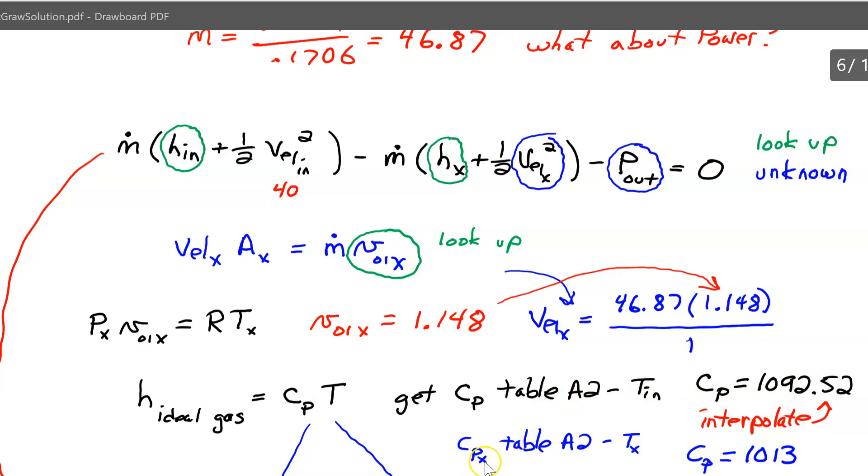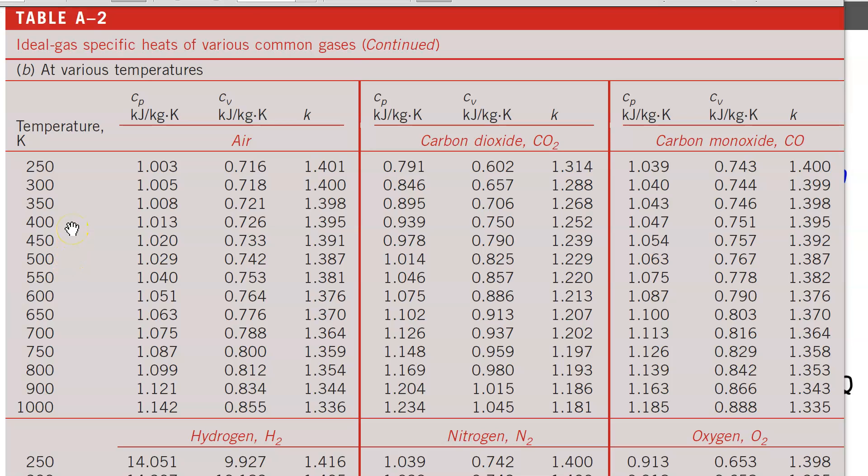For the second one, the c_p going out. Let me pull up the table again. Okay, the exit temperature is 127. So if you add 273 to get absolute, you get 400. So thank goodness this is in the table. So the number is 1.013. Again, multiplied by 1,000. So it's 1013.